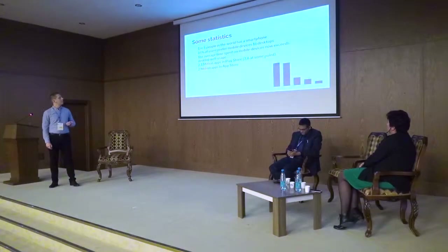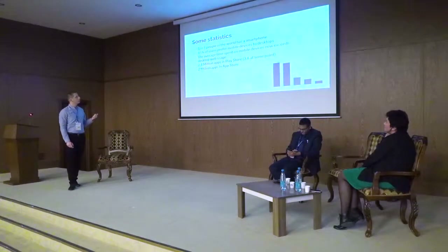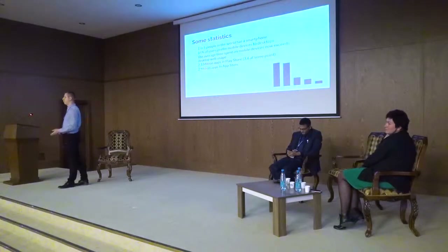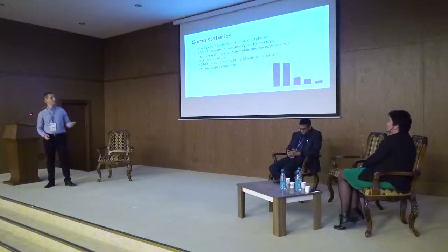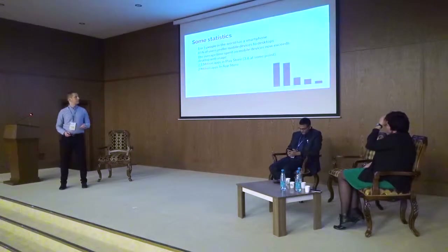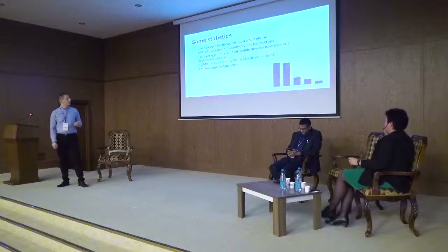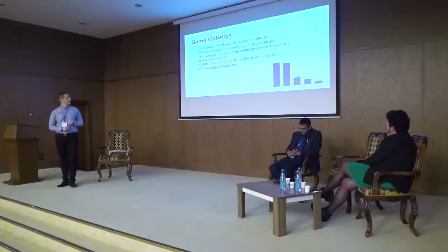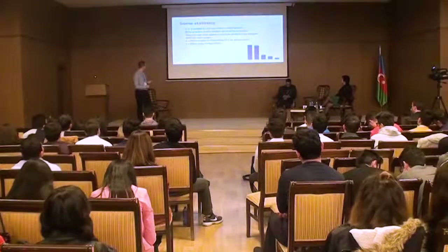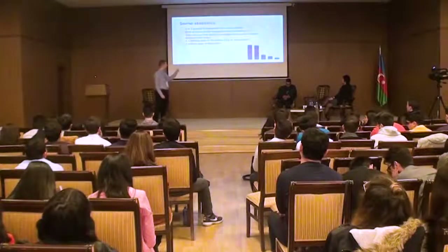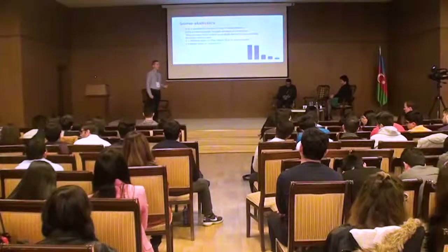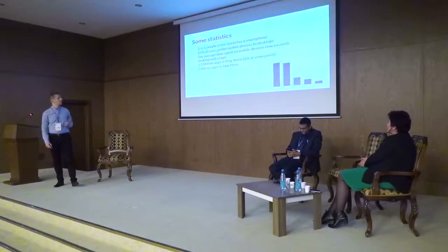Let's look at some statistics. One in five people in the world has a smartphone, and this count is currently increasing. 85% of users prefer mobile devices — statistics show that people mostly use smartphones for everyday needs, using desktop applications less and less. The average time spent on mobile devices is now much more than on the web. There are 2.1 million apps in the Play Store — at one point it was 3.6 million, but after cleanup and removal of harmful applications it's now 2.1 million — and 2 million in the App Store. This shows how much people need these applications.